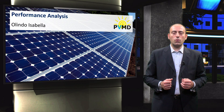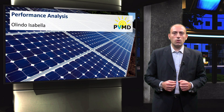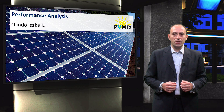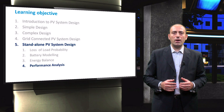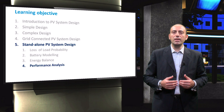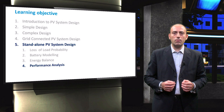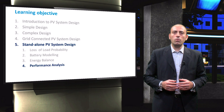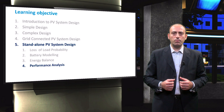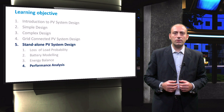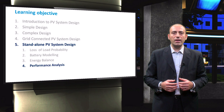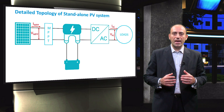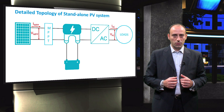In this final video, you are going to complete the design of the standalone PV system by simulating its performance. In particular, here you will learn about the control strategy that will be implemented to make the PV system operate at its optimum efficiency. Then, we shall determine the performance of the PV system and finally carry out a design check to verify if the design meets the requirements. Let us first recap the concepts covered in the previous two videos.